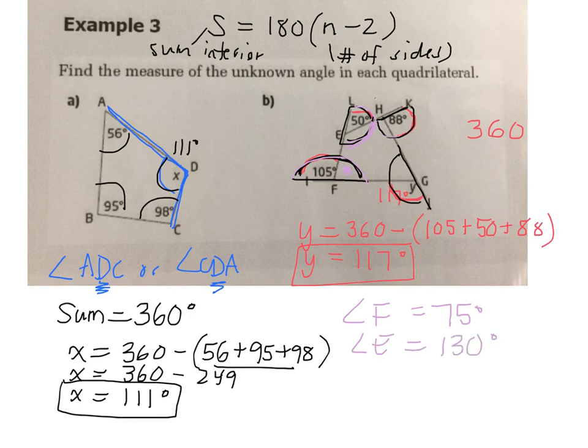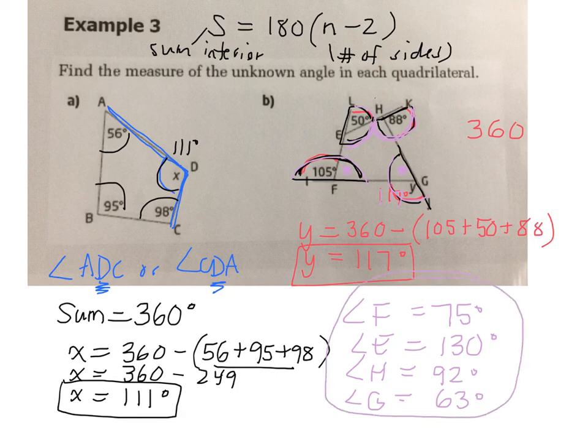Good. Angle H. What plus 88? So 180 minus 88 is what? 92. 92 degrees. Good. And then our last one here. This was 117. That's what we calculated. 180 minus 117 will give me angle G. What is 180 minus 117? Thank you. 63. Okay. These represent the four interior angles in the quadrilateral.